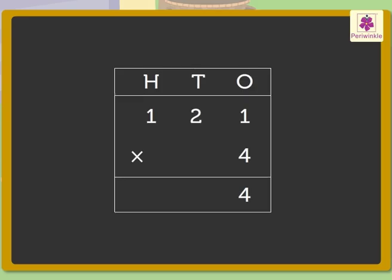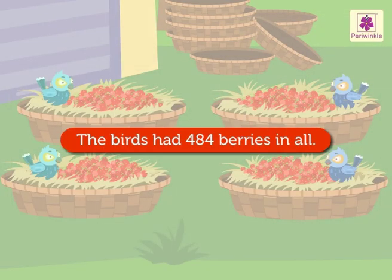Now multiply the digit in the tens place with the multiplier. So 2 into 4 is equal to 8. Write 8 in the tens column. Lastly, multiply the digit in the hundreds place: 1 into 4 is equal to 4. Write 4 in the hundreds column. We found the answer — it is 484. The birds had 484 berries in all!